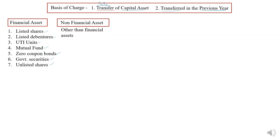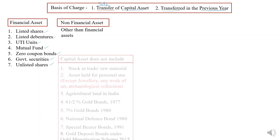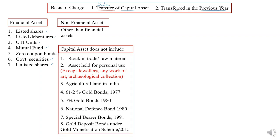Non-financial asset is anything other than the items listed — anything apart from that list will come under non-financial asset. There are certain assets which are not included as capital assets at all. The first one is stock and trade and raw material. If the assessee is using stock and trade or raw material in his business and this stock and trade or raw material is sold, then that sale is not a capital asset. The profit or gain from that sale will not be charged under capital gain.